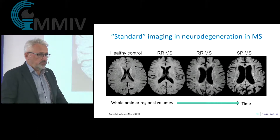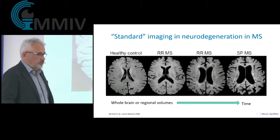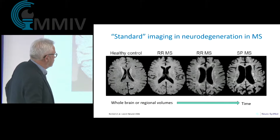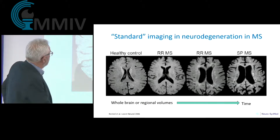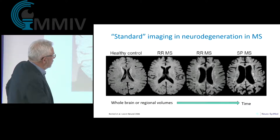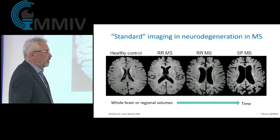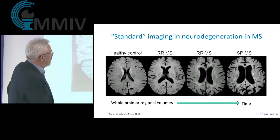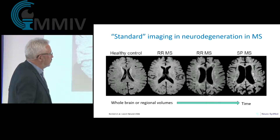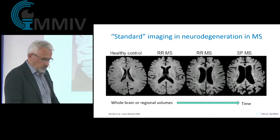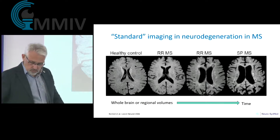Regarding the neurodegenerative phase of the disease, the typical approach is measuring volumes. A healthy control brain is compared to an early relapsing-remitting image — we can see atrophy from the very beginning — and then more advanced relapsing-remitting and secondary progressive stages show progressive atrophy. We need to stop that process.